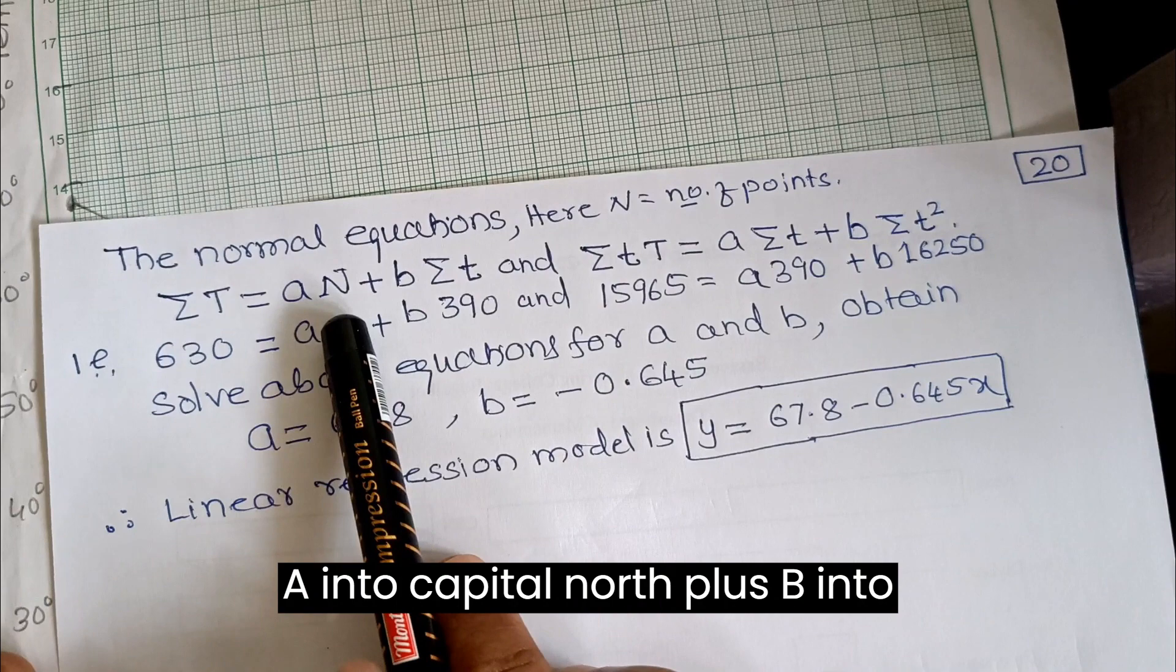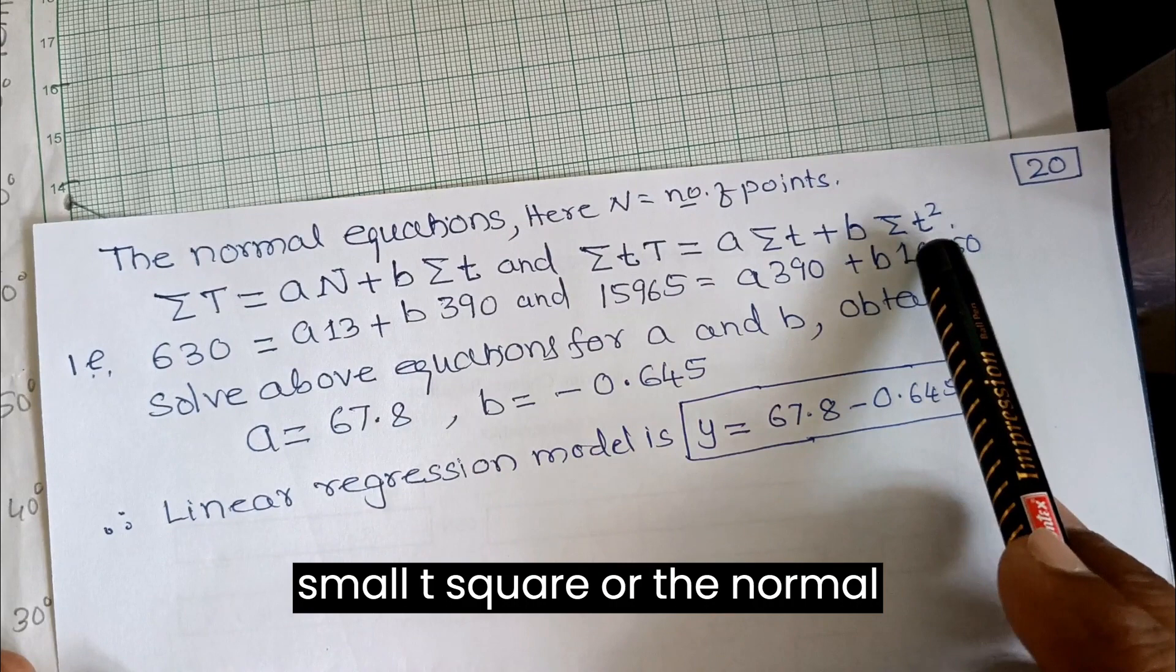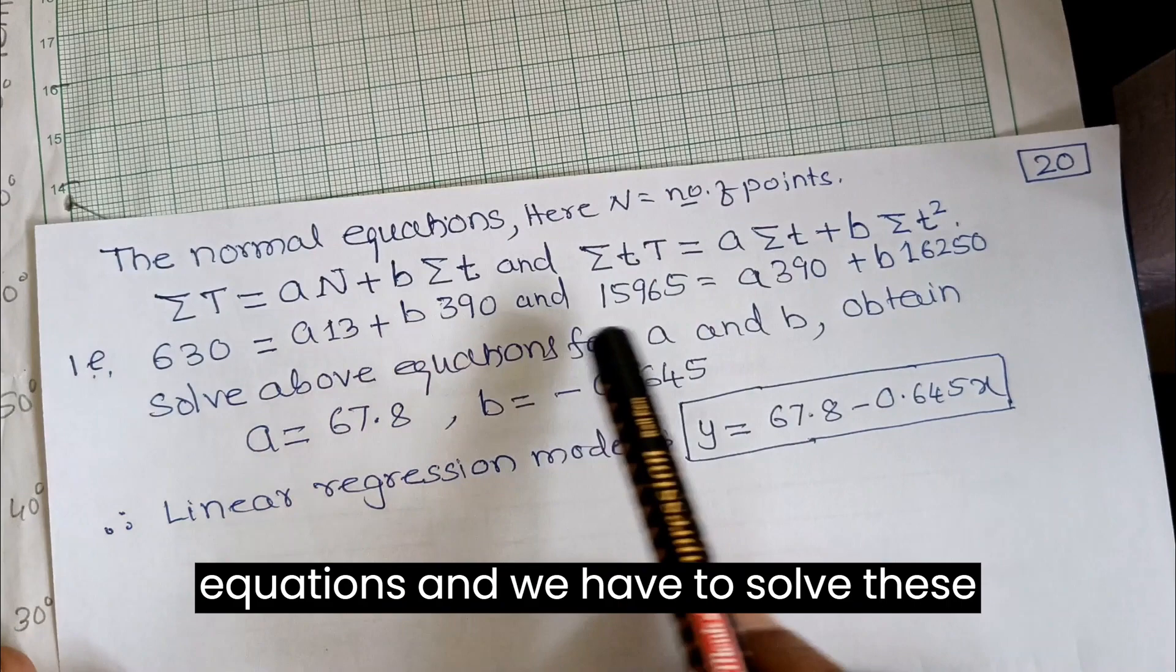The normal equations are: summation of capital T equals a times capital N plus b times summation of small t, and summation of T times t equals a times summation of t plus b times summation of t square.